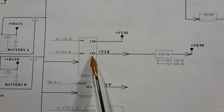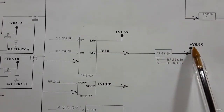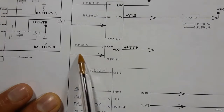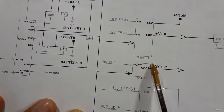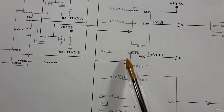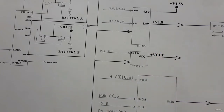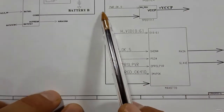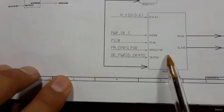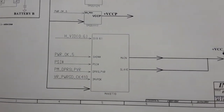So V_bat goes to the 5 V and 3 V IC, and also to the IC that generates 1.8 V, 1.5 V, and 0.9 V. V_bat is also applied to the TPS51117 IC, which generates plus V_CCP — the voltage for the GMCH, ICH, and CPU.